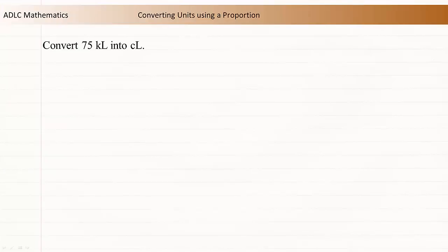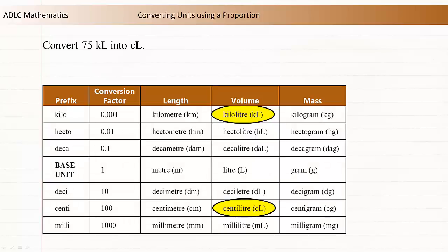This video demonstrates how to convert 75 kiloliters into centiliters using a proportion. Let's begin by using the prefix table to determine a conversion ratio for kiloliters and centiliters.